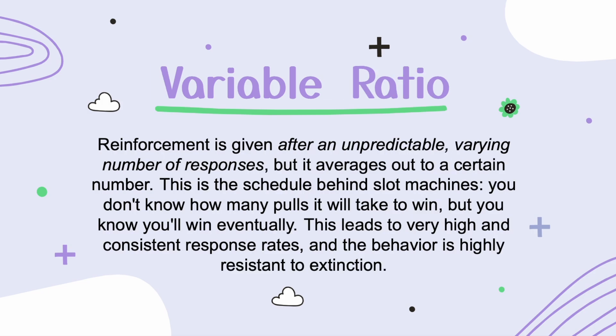The last one for today is variable ratio. Reinforcement is given after an unpredictable, varying number of responses, but it averages out to a certain number. This is the schedule behind slot machines — you don't know how many pulls it will take to win, but you know you'll win eventually. This leads to a very high and consistent response rate, and the behavior is highly resistant to extinction. This one is the most addictive.